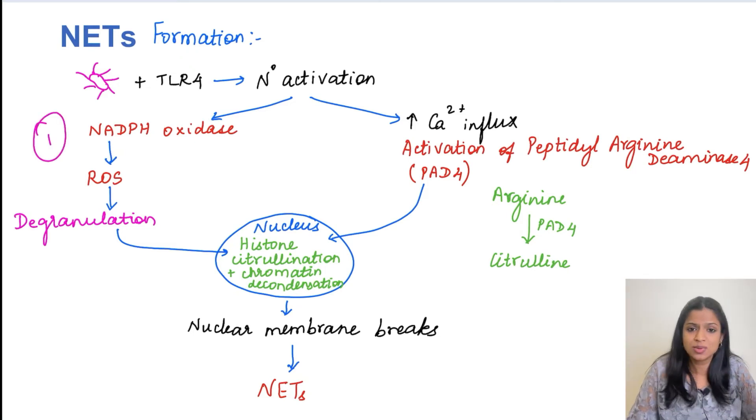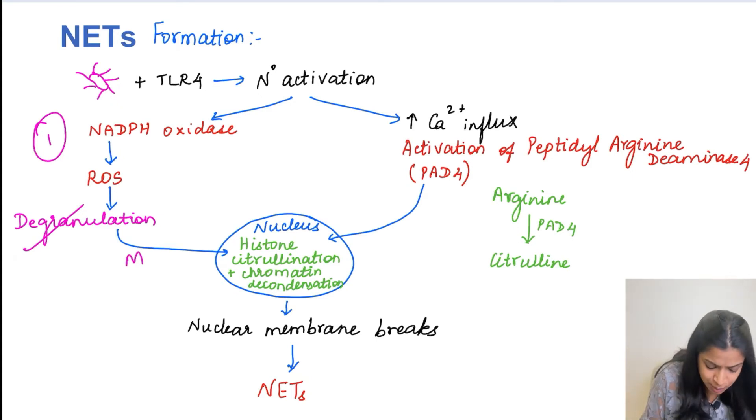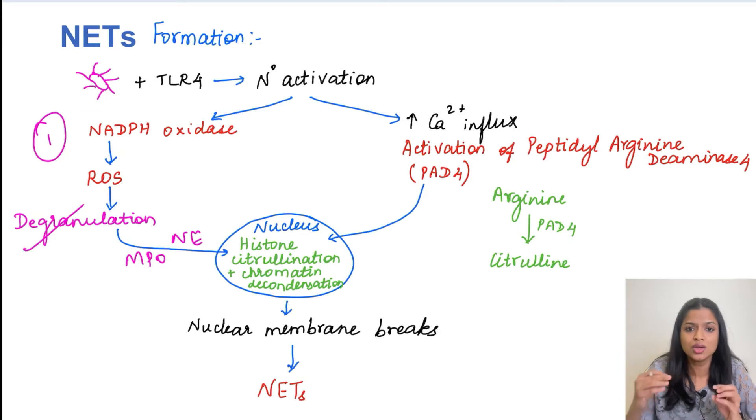So when this reactive oxygen species are formed, they degranulate the lysosomal enzymes. So these degranulated lysosomal enzymes, which are basically MPO, neutrophil elastase, they enter into the nucleus and they cause the chromatin decondensation.